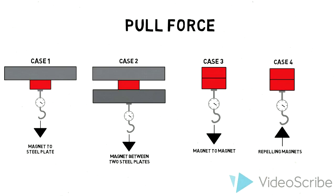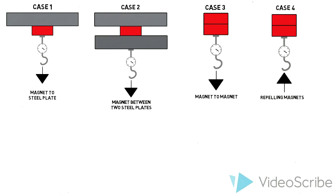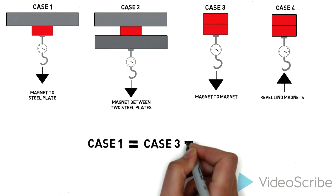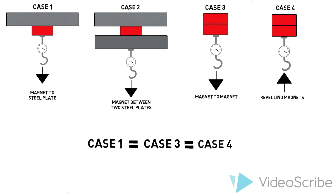A strange phenomenon of neodymium magnets is that case one is equal to case three, which is also equal to case four. Case two is greater than, but sometimes equal to case one, depending on the magnet shape.